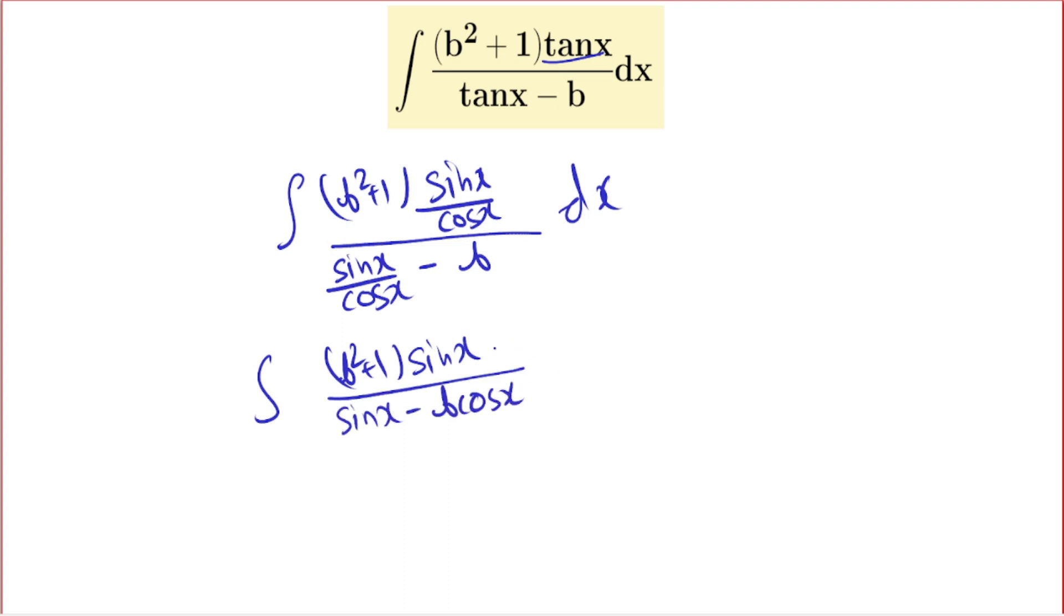Now I'm going to add here b cos x and subtract minus b cos x, which is dx. Okay, now I'm going to take this b square sine x plus b cos x over this.